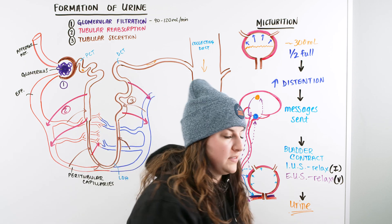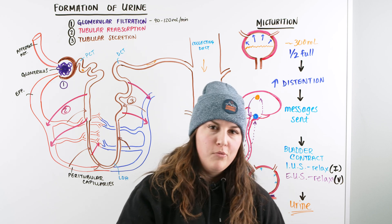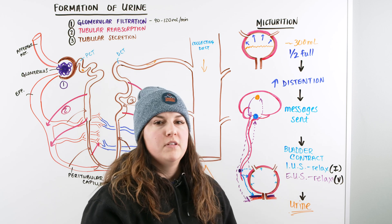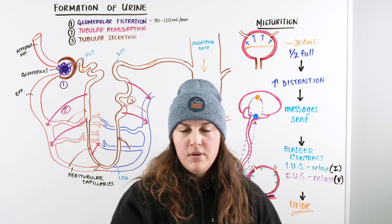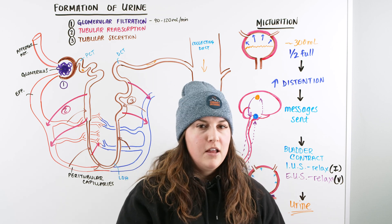So I hope that made sense. I hope you understand now how urine is formed and also how we are able to urinate and have control over that. And then if there's any interruption in this pathway or our brain is underdeveloped and not able to comprehend this pathway, then we have some issues with leaking or peeing our pants or anything like that.